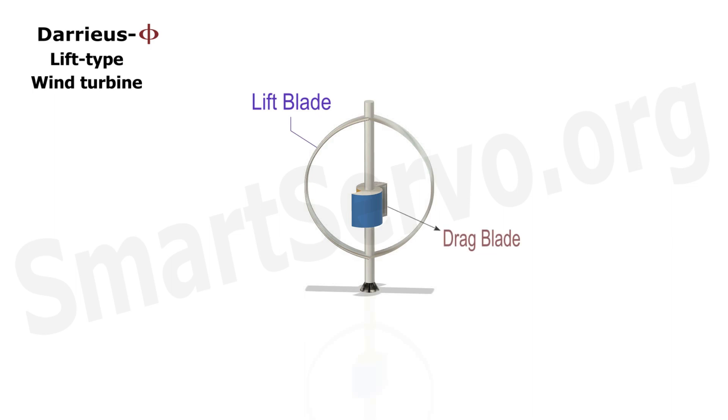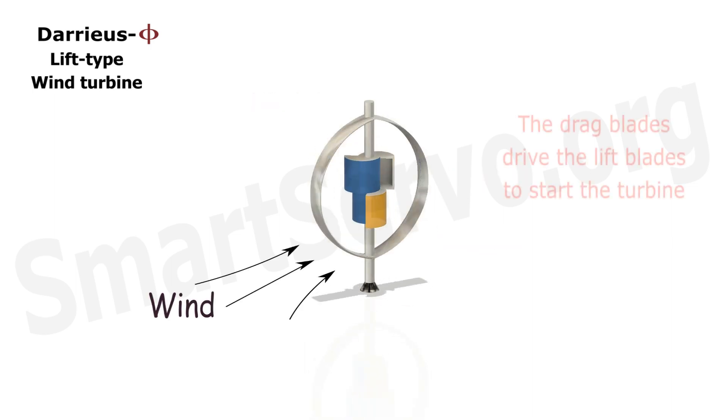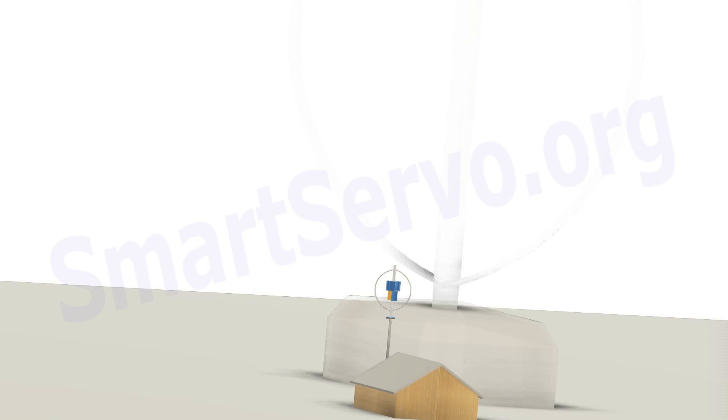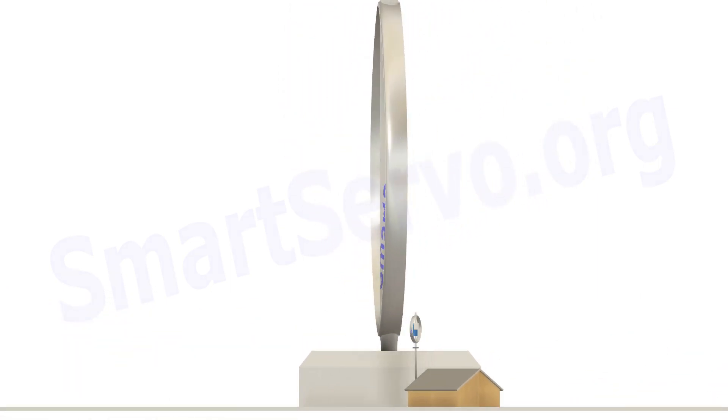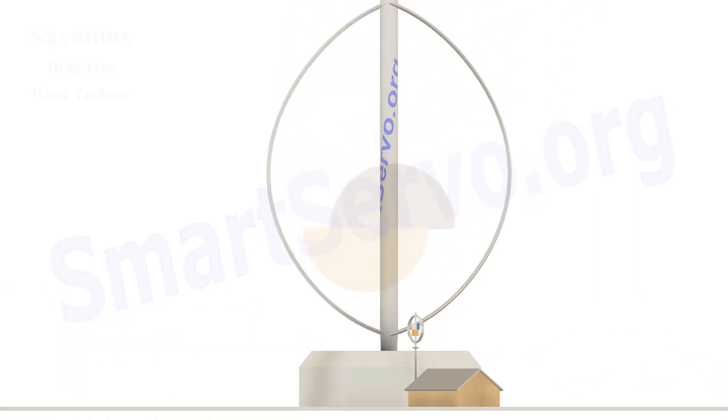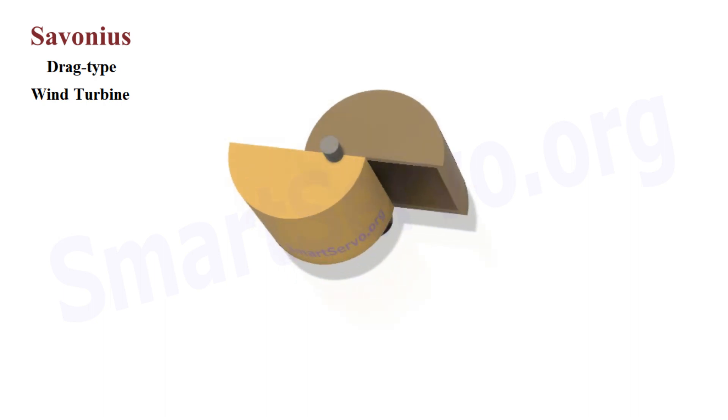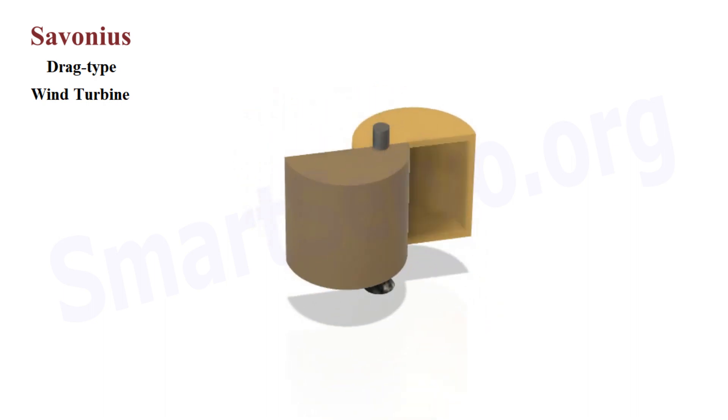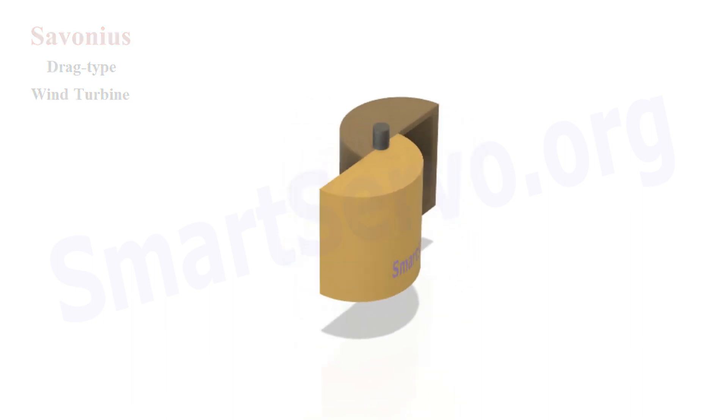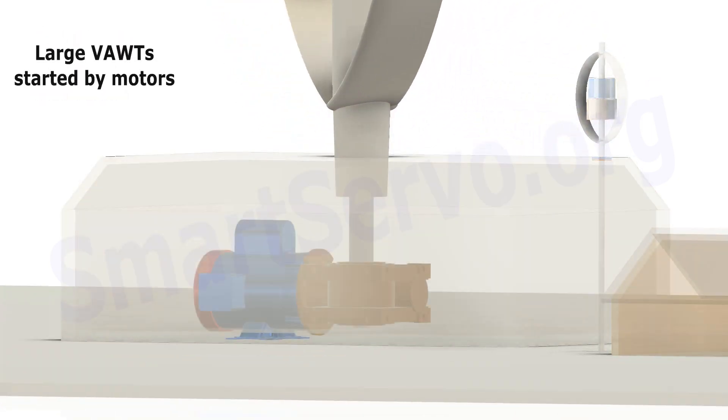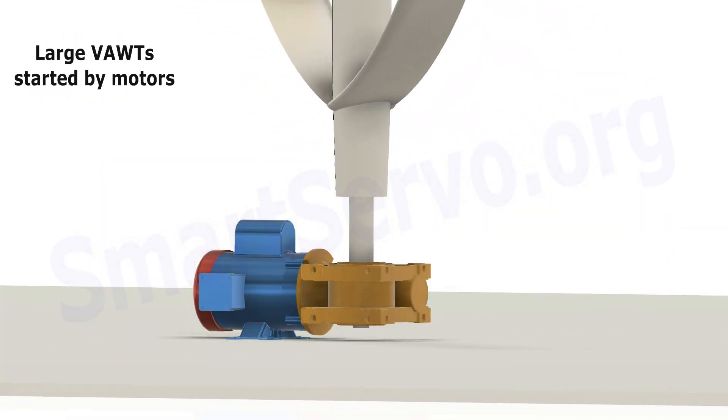Traditionally, drag-type blades are used to assist starting, but when the wind turbine is larger in size, drag blades are not suitable. Due to the wide and thin structure of the drag blade, it is difficult to maintain the required strength when enlarged, so the large vertical axis wind turbine is usually started by a motor.